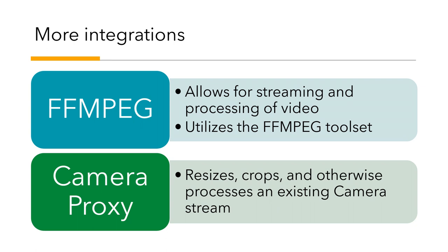The FFmpeg integration is what allows all the processing of the video. The other integration I want to mention briefly is Camera Proxy, which allows you to downsample a camera. So if you have a 1080p video stream and want to show it in the UI as 480p - which makes a lot of sense if you're showing 9 or 10 cameras - you can use Camera Proxy to reduce the resolution, minimizing both processor and network load.